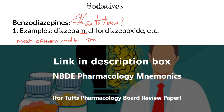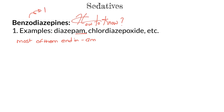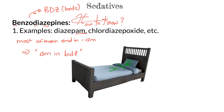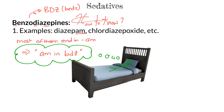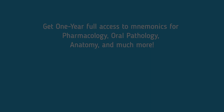How can we remember that benzodiazepines end in '-am'? Benzodiazepines are abbreviated as BDZ, which we pronounce as 'beds.' So the mnemonic is 'AM in beds' — like laying in bed, just like this person. Remember: if a drug ends in '-am,' it is most probably a benzodiazepine, or one of the 'beds.'